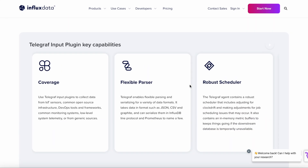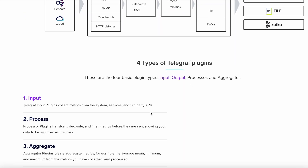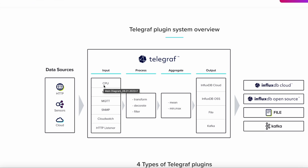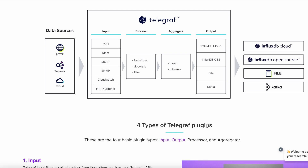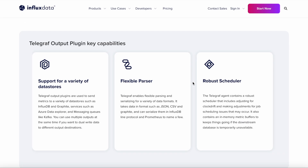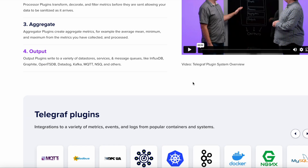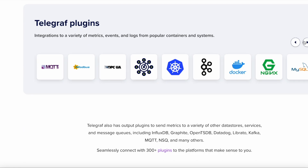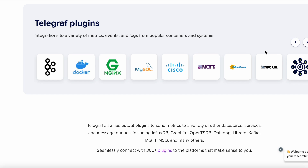The full plugin list is on a different part of the website. Basically, you have input plugins — what most people use to bring data in — then process plugins that transform, decorate, and filter data, aggregate plugins that can compute mean, min, and max, and finally output plugins that send data to things like InfluxDB Cloud, open source, a file, Kafka, or whatever output plugin is available.